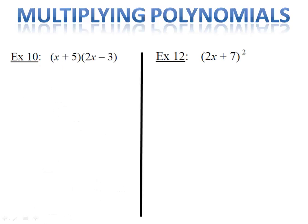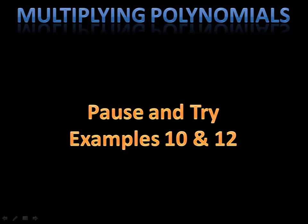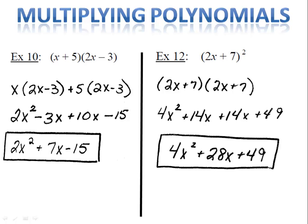Examples 10 and 12 are for you to try — use the examples we just did as your guide. Please pause the video here. In example 10, we use the distributive property twice, or FOIL. We distribute x into 2x minus 3, and the 5 into 2x minus 3, giving us 2x squared plus 7x minus 15. In example 12, 2x plus 7 squared is 2x plus 7 times 2x plus 7. We multiply, combine like terms, and end up with 4x squared plus 28x plus 49.